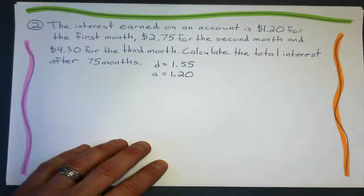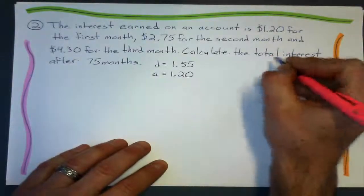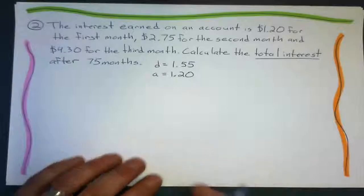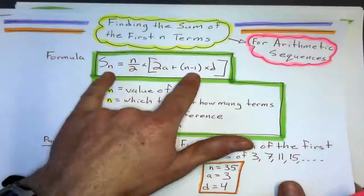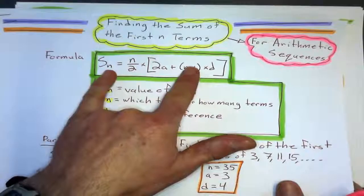Calculate the total interest. Total interest. That means it's going to be a sum. Sum problem. I want to find the sum of the first 75 months of interest I'm going to get. So I'm using this formula right here.